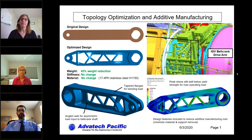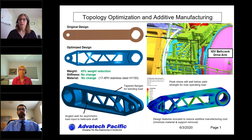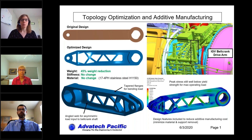Today we're going to look at an example where software was applied to topology optimize an existing part. The part we'll be talking about is this torque arm, outlined in black here. It connects a linear actuator to a bell crank assembly that, through these unison rings, ultimately positions the inlet guide vanes to the compressor section for a gas turbine engine. This is a legacy part that was redesigned for additive manufacturing because of the low volumes needed, but also because of the design benefits possible from topology optimization.